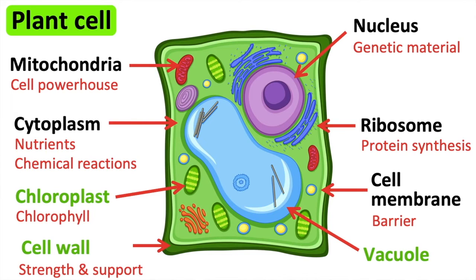Now we have learnt the basic structure of plant cells. It's important to remember that not all plant cells look the same. The reason for this is because plant cells are specialised for their functions.